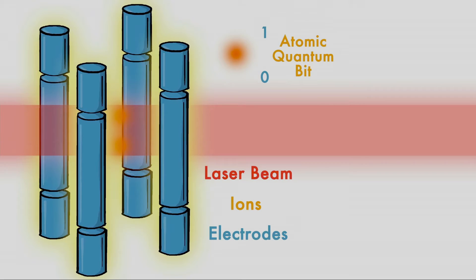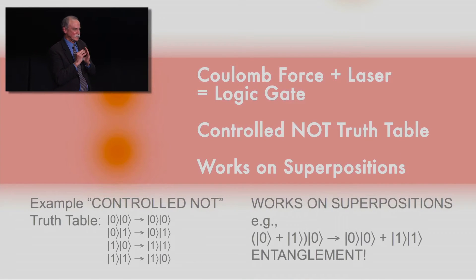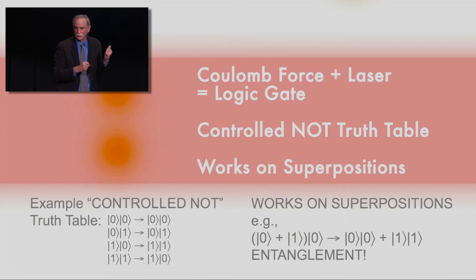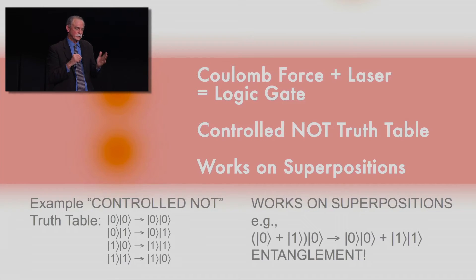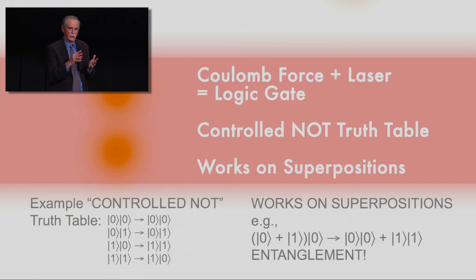Our atomic ions are in two different energy states, which we label as the parts of our quantum bit. We use electromagnetic forces from laser beams in combination with the Coulomb repulsion between the ions to make elemental logic gates. On the lower left of the picture there's a truth table showing how we can make a logic gate between two bits. The first entry on the left side is what we call a control bit — if the control bit is a zero, nothing happens to the second bit; if it's a one, it flips the state of the second bit.